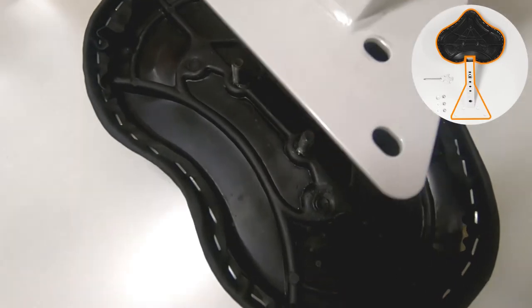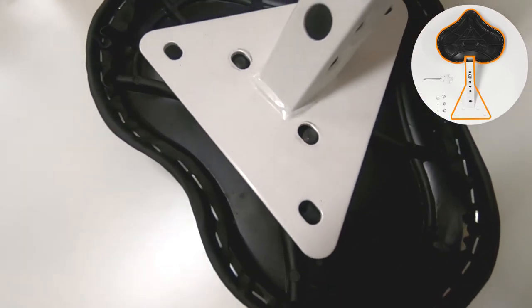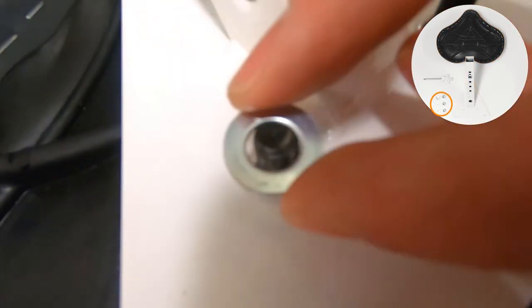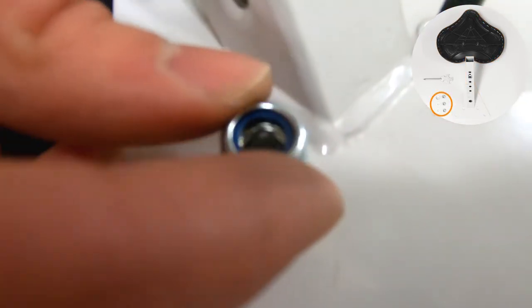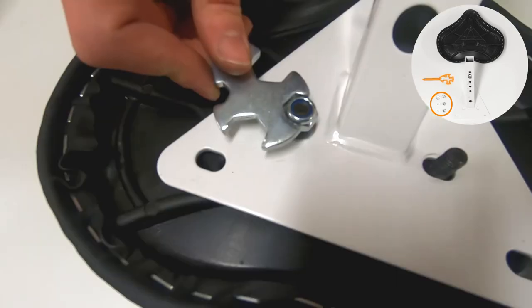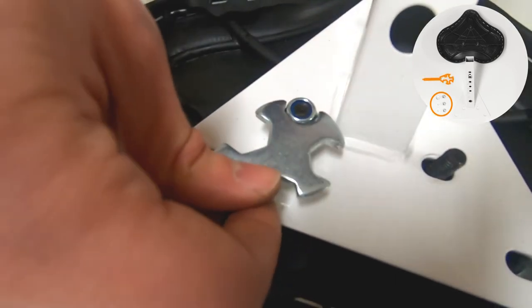To attach the seat cushion to the seat support frame, invert the cushion and align the three protruding bolts on the bottom with the seat support. Feeding the bolts through the three support holes, place the washers over the seat cushion bolts and hand tighten the 8mm nuts, then finish them off with a 13mm wrench.